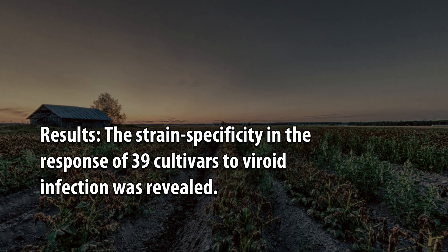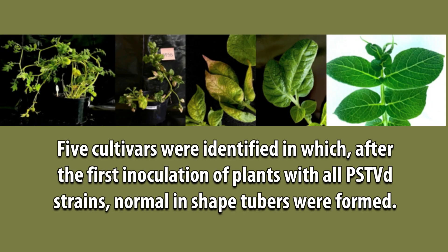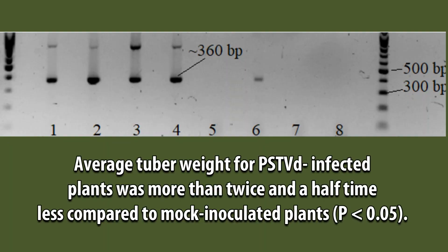Results: the strain specificity in the response of 39 cultivars to viroid infection was revealed. Five types of symptoms on tubers were identified at 90 dpi. Five cultivars were identified in which, after the first inoculation of plants with all PSTVd strains, normal in-shape tubers were formed. Average tuber weight for PSTVd-infected plants was more than two and a half times less compared to mock inoculated plants.